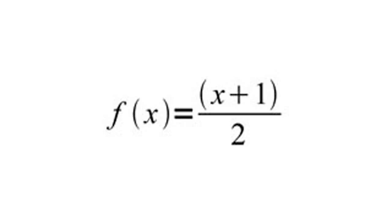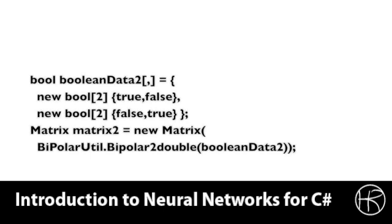Now we're going to see how you can use code to actually work with a matrix that makes use of these sort of numbers. Here you see a code example that makes use of the bipolar conversion. We create a simple two-dimensional array called booleanData2. This array holds true and false values. To pass this into the matrix class to be initialized, you need to use the bipolar utility class that you see below.